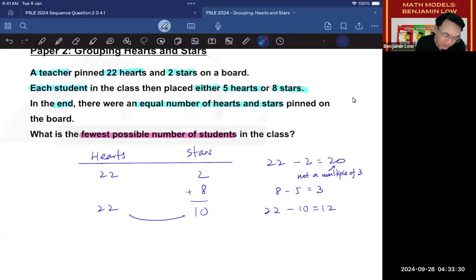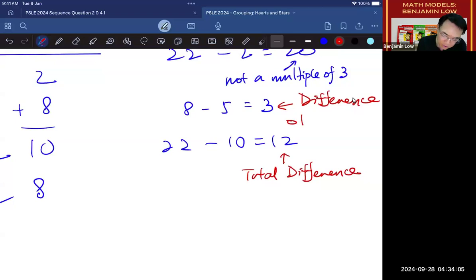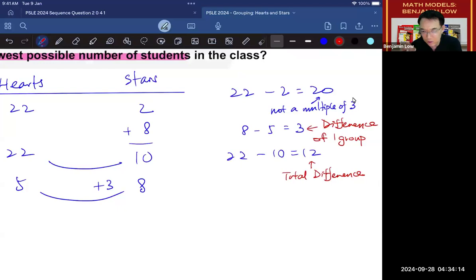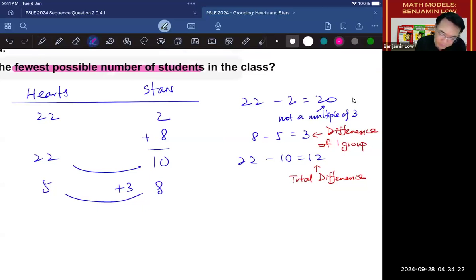So now the next question is, if 8 minus 5 will give you an addition of 3, how many of these 3s do I need to make up for the difference of 12? So 12 is the total difference now that you need to catch up, and 3 is the difference per one group. One group meaning one student who puts 8 stars and one student who puts 5 hearts. So now if I were to take these two numbers and divide them, I would get 4 groups.